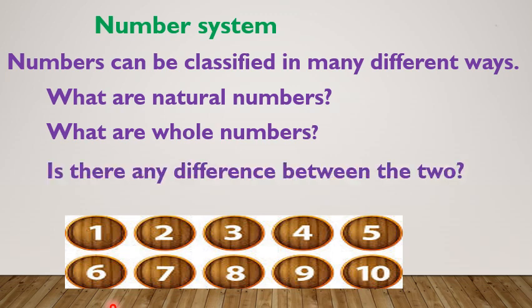Natural numbers are nothing but counting numbers. How do we count things? We count by using numbers, right?